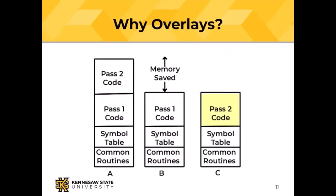Here's why: if I have a two-pass assembler that reads through all of the source code and builds a symbol table, then reads through it again to generate object code — well, it might be bigger than the memory I have. But I don't need the pass-2 code while pass-1 is running. If I could run pass-1 and then overlay the pass-1 code with the pass-2 code, I save a chunk of memory and maybe I can make my program fit.